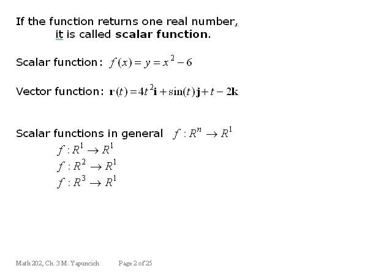If the function returns one real number, then it's called a scalar function. Of course, if you have a complex valued function and it returns one complex valued number, then it's also called a scalar function. But here we're only talking about real valued functions, but the idea is that it returns one real number. This is a scalar function, f of x equals x squared plus 6, because it returns one real number which you could call y.